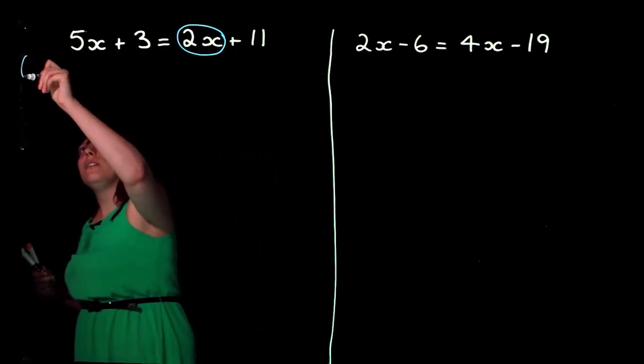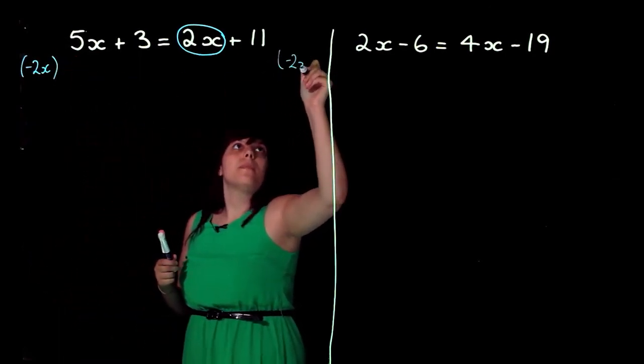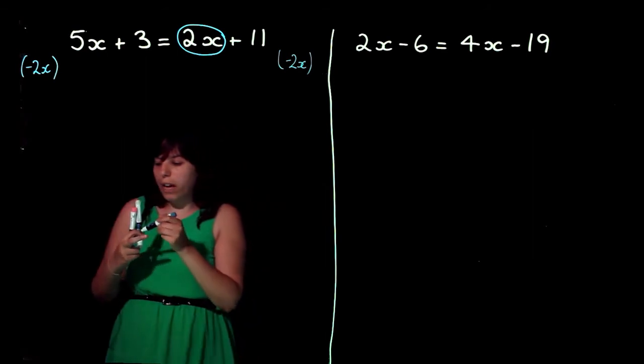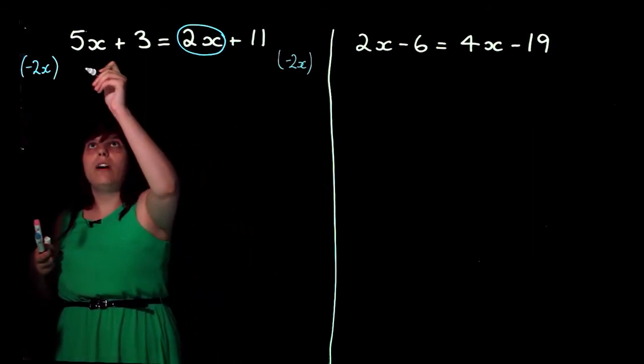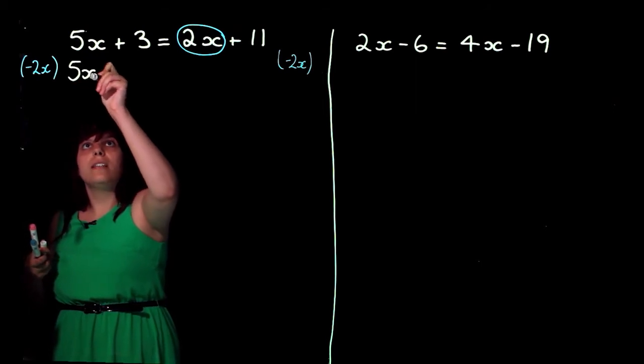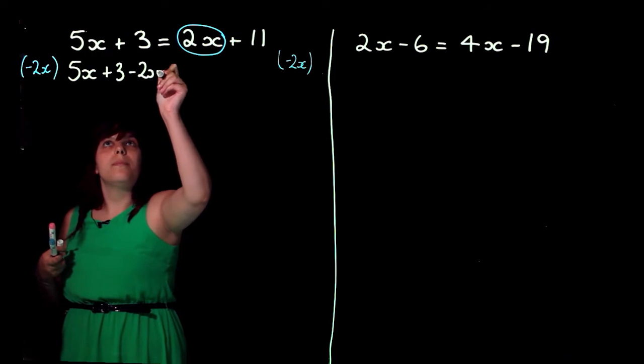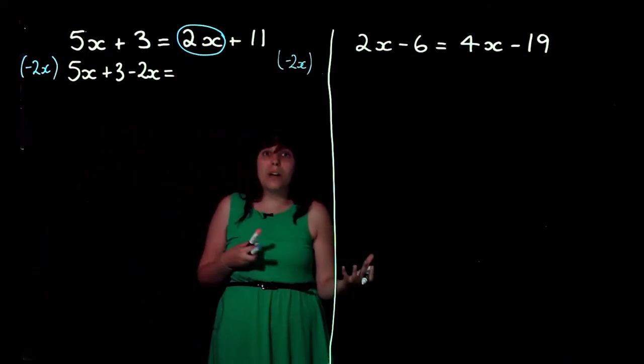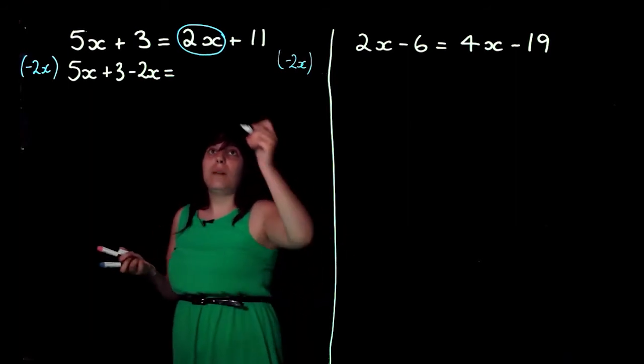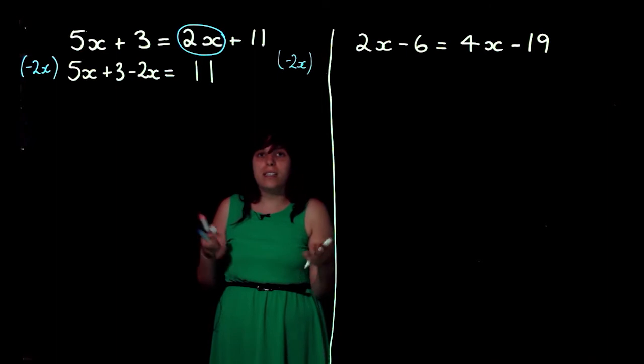So, the first thing I'm going to do is minus 2x from both sides. I'm going to rewrite this as 5x plus 3 minus 2x. And on this side, 2x plus 11 minus 2x is just going to end up as plus 11, because the 2x minus 2x gives me 0, which is what I wanted in the first place.